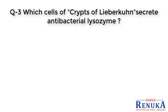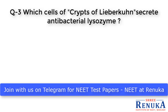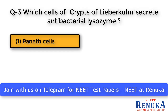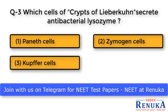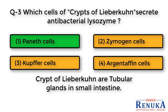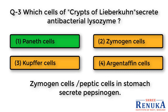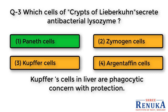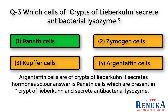Question 3: Which cells of crypts of Lieberkühn secrete antibacterial lysozyme? Options: 1. Paneth cells, 2. Zymogen cells, 3. Kupffer cells, 4. Argentaffin cells. The answer is Paneth cells. Crypts of Lieberkühn are tubular glands in the small intestine. Zymogen cells are present in the stomach, not the intestine. Kupffer cells are present in the liver and are phagocytic, not in the intestine. Argentaffin cells are of crypts of Lieberkühn but secrete hormones, not antibacterial lysozyme. So our answer is Paneth cells, which secrete antibacterial lysozyme.